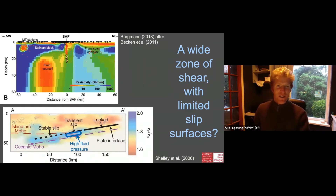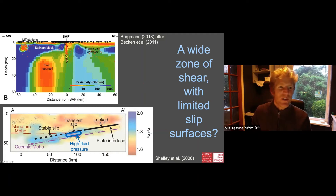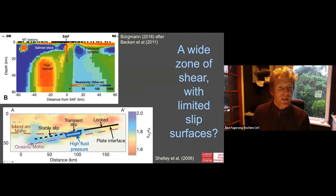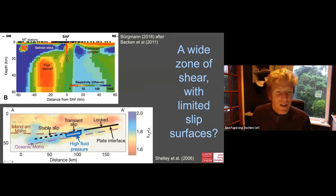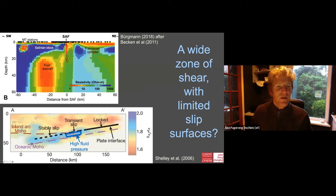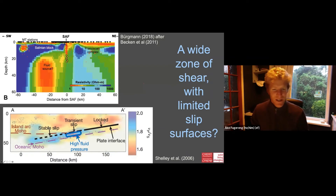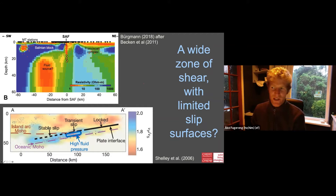Going back to the geophysical data, this model requires a wide, low-stress, wet fault zone. Looking at the San Andreas, that's basically what we have — a fluid source is inferred at depth. You can see this in maps of seismic velocities or resistivity: water has lower resistivity or higher conductivity, and the lower resistivity in the fault zone is possibly related to fluids flowing in and lubricating the system. Similarly for Japan's subduction zone, ratios of seismic velocities show high values likely because of fluids, coinciding with the area of slower slip.